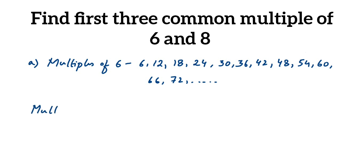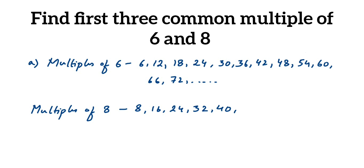Similarly, we're going to find the multiples of eight the same way we did for six. Writing down the eight times table: eight, sixteen, twenty-four, thirty-two, forty, forty-eight, fifty-six, then seventy-two, eighty, and so on.